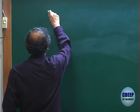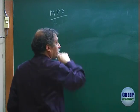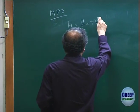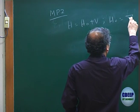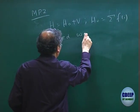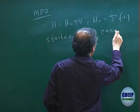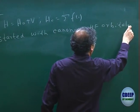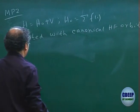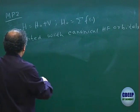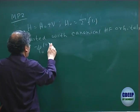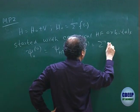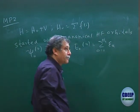We did what we are calling Møller-Plesset plus H second order. We divided H equal to H naught plus V, where H naught was the sum of the Fock operators. The starting point is the H naught eigenfunction: psi 0,0 is psi Hartree-Fock, and E 0,0 is the sum of the orbital energies, using A as an index for occupied orbitals.